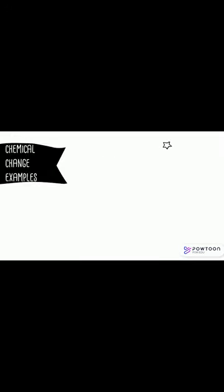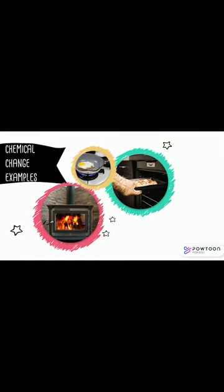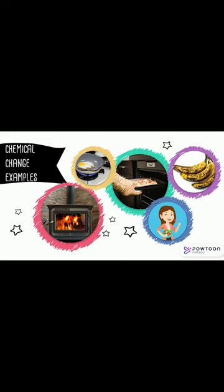Some more examples of chemical changes include frying an egg, burning wood, baking a pizza, digesting food, or a rotting banana.